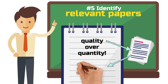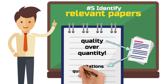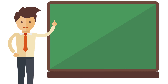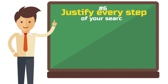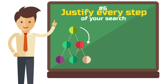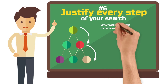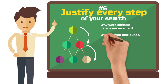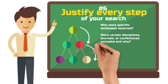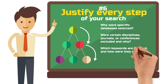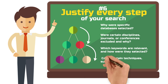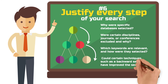Step 6: Justify every step of your search and selection process. In a systematic literature review, enormous importance is placed on how consistently the research design was conceived and implemented. This includes justifications for every step you took. For example: why were these databases selected? Were certain disciplines, journals, or conferences excluded and why? Which keywords are relevant and how were they selected? Could certain techniques such as a backward search have improved the search?